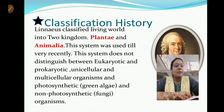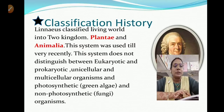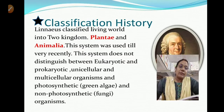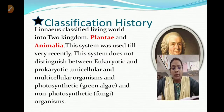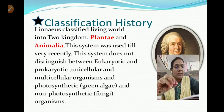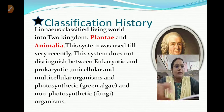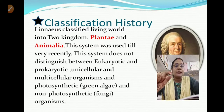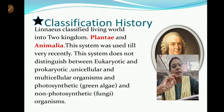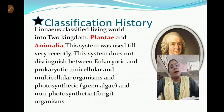Then comes Carolus Linnaeus, whose name we also read in the previous chapter for giving binomial nomenclature. He has a very large contribution to biology in several fields. In the field of classification, Carolus Linnaeus gave the two-kingdom classification. He organized Aristotle's classification better - one kingdom Plantae and the other kingdom Animalia. This system was used until recently.